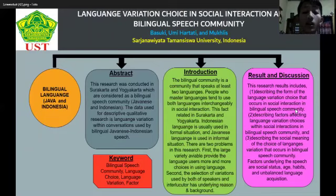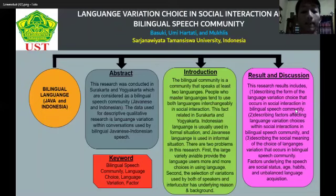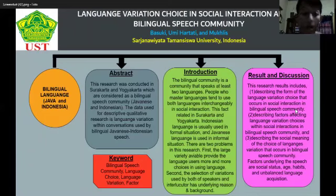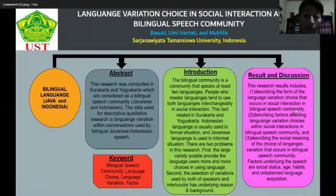The third factor is habits, which refers to something that becomes common sense because everyone within that speech community does it. Habits can also be based on the relationship between the speaker and interlocutor. For example, if we meet each other regularly and talk informally every day, we speak with Java Ngoko.